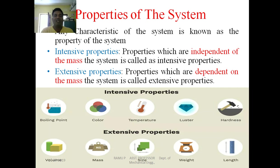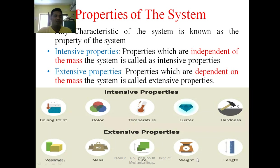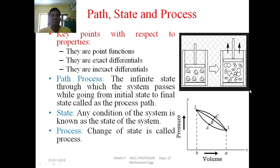Thermodynamic properties are classified into two types: intensive and extensive. Intensive properties are independent of mass — examples include boiling point, color, temperature, and hardness. Extensive properties depend on the mass of the system — examples include volume, mass, weight, and length, which are purely dependent on the mass of the matter. These properties are generally called thermodynamic properties.